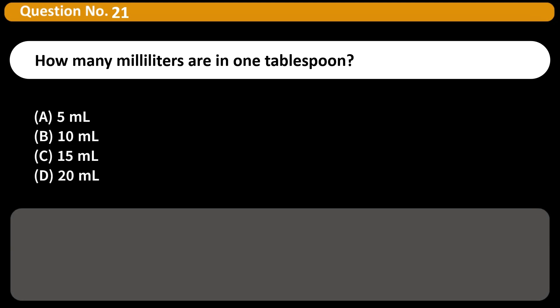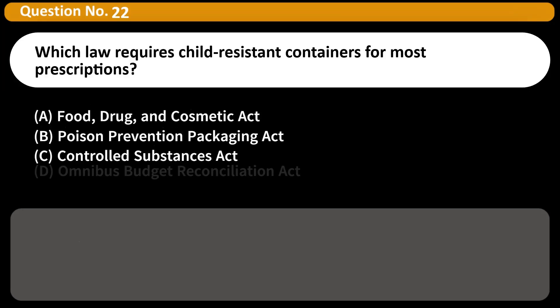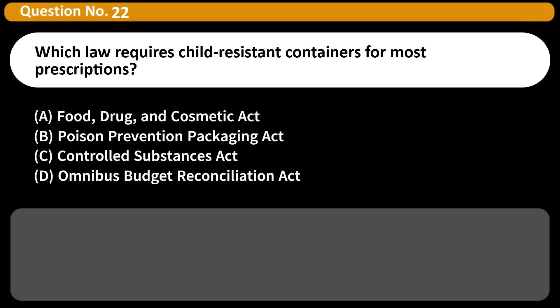How many milliliters are in one tablespoon? A. 5 milliliters. B. 10 milliliters. C. 15 milliliters. D. 20 milliliters. Answer: C. One tablespoon equals 15 milliliters.